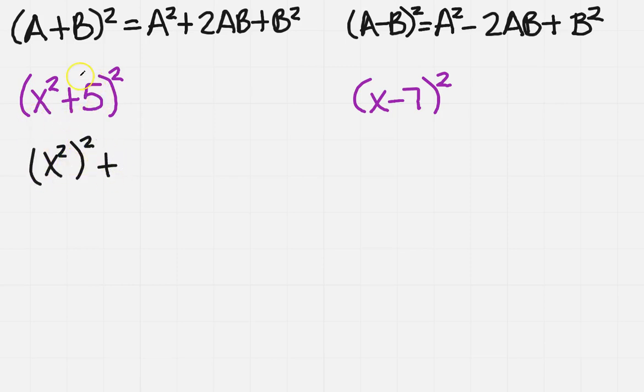And then I'm going to multiply the inside. So I'm going to have 5x squared, and I'm going to multiply by 2. So 2 times 5x squared. And then I'm going to have 5 squared. And I'm going to simplify that, so I get x to the fourth plus 10x squared plus 25.